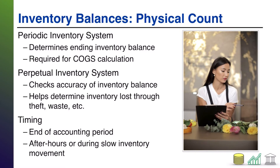First off, the physical count. Whatever inventory you actually have, assuming you own it, that needs to go into your inventory account. Typically, companies are going to physically count their inventory every so often. In a periodic inventory system, this is a really big deal because we aren't tracking how much inventory we're selling at any given point. So the physical count is the only way to know how much inventory you have on hand, and therefore what your cost of goods sold is as well.